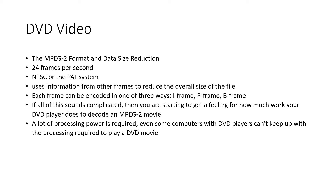Depending on the type of scene being encoded, the encoder will decide which frame types to use. If a newscast were being converted, more predicted frames could be used because most of the scene is unaltered — only the newsreader's lips and eyes move. But if a fast action scene was converted, where things change quickly from one frame to the next, more intra-frames would have to be encoded. The newscast would compress to a much smaller size than the action sequence. This shows how much processing power a DVD player requires to decode the MPEG-2 movie.